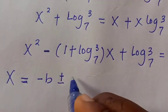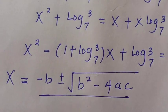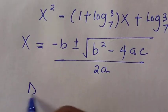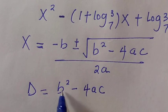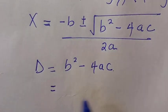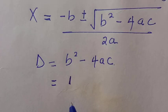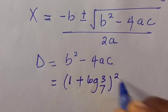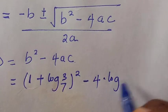We introduce these into the quadratic formula: x equals negative b plus or minus square root of b squared minus 4ac, divided by 2a. Let's first compute the discriminant: delta equals b squared minus 4ac. The value of b is negative of 1 plus log 3 base 7, a is 1, and c is log 3 base 7.